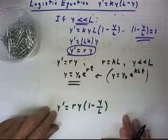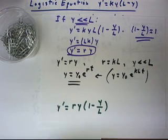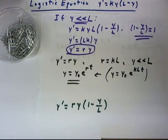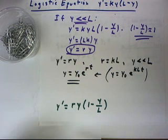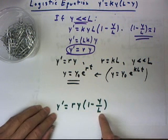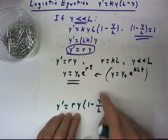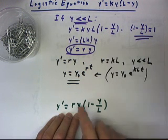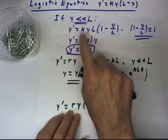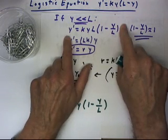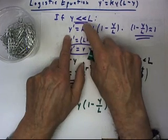A very common form of the logistic equation in textbooks and in writing would be this: y' = ry(1 - y/L). Now, this is identical to this equation with r equal to kL, and this equation did not depend on our assumption that y is much less than L.